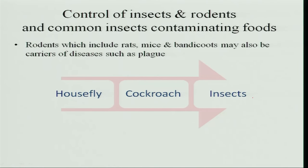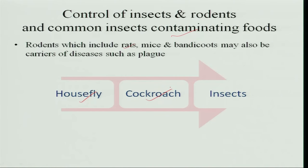Control of insects and rodents is very important. Common insects and pests that contaminate food include rats, mice, and bandicoots — they carry many infections in their hair, saliva, and on their legs. The housefly moves from place to place and contaminates food. Cockroaches are particularly bad insects that move on food and everything, contaminating it, and there are many small insects which also contribute to food spoilage.